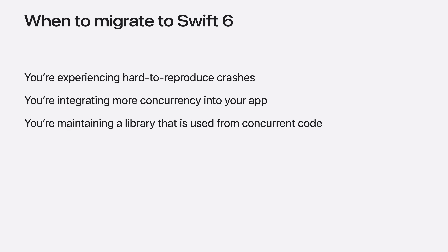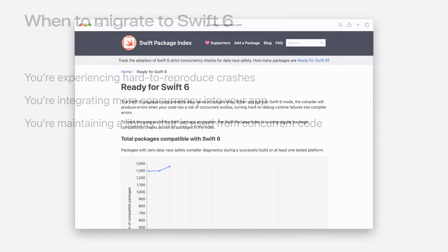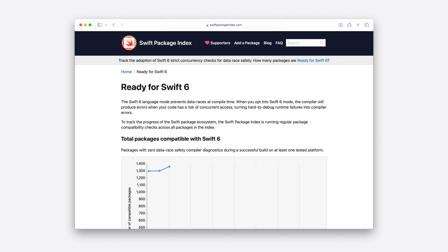It can be especially useful if you're experiencing hard to reproduce crashes and want to methodically eliminate the risk of data races. And if you're actively working on integrating more concurrency to improve responsiveness and performance, adopting Swift 6 mode can ensure those changes don't risk introducing new data races. If you maintain a public Swift package, we encourage you to adopt Swift 6 as soon as possible to help your users who want to migrate their code bases too. Everyone can follow along on the adoption of Swift 6 in popular packages on swiftpackageindex.com.